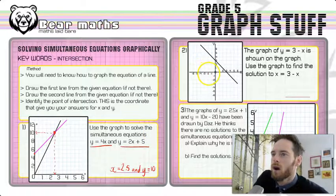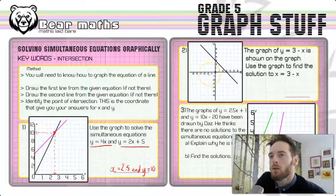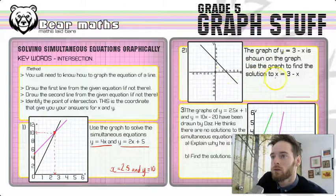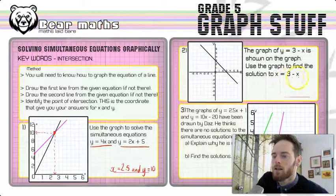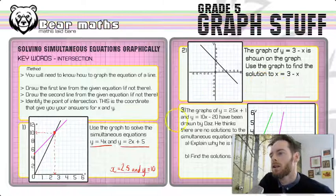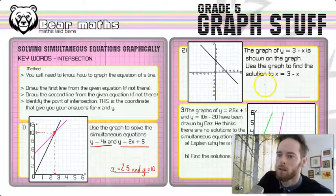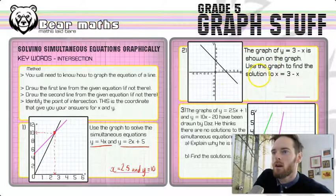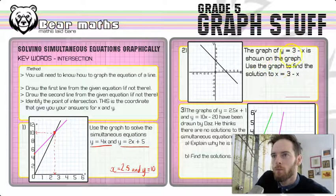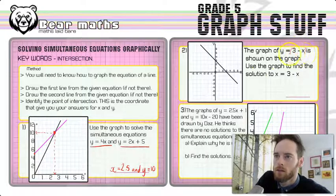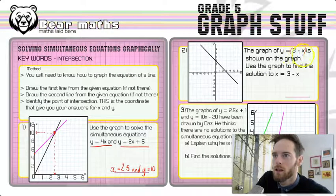Now in question 2, we've got the graph of y equals 3 minus x, and that's shown on the graph. Use the graph to find the solution to x equals 3 minus x. Now this is a lot more difficult. This is why we're up here at the grade 5 stuff. Could get a nice question like that, could get a horrible question like this. So this is one where we need to think of, well, y represents this expression here. So we can call that, I'm going to put properties in brackets there.